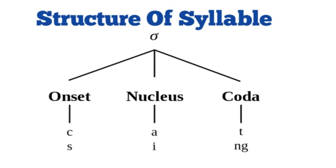Onset means the initial consonant or consonant cluster. Nucleus means vowel — the vowel sound. And coda means the final consonant or consonant cluster. We have two words to explain this structure.